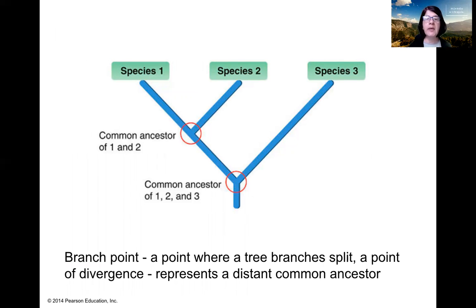What you will see here, circled in red, are branch points. A branch point is where the tree branches — where the branches split — a point of divergence. A branch point represents a distant common ancestor. The first branch point you see here is the common ancestor of species one, two, and three. The next red circle branch point is the common ancestor of species one and two.